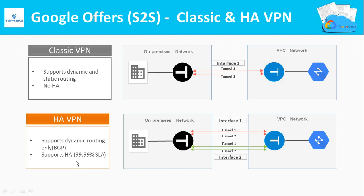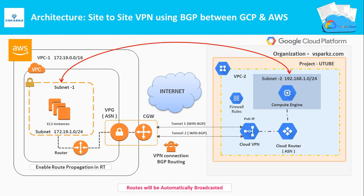Classic VPN supports both static and dynamic routing modes. In this video we are going to see the demo of how to create a Classic VPN between GCP and AWS using dynamic routing. The protocol used for dynamic routing is BGP. This is the exact architecture for the VPN setup — since it is dynamic routing, BGP sessions will automatically broadcast the routes between GCP and AWS.